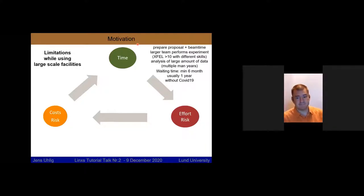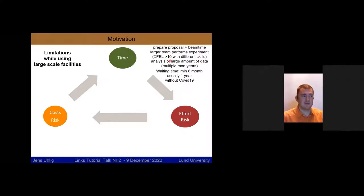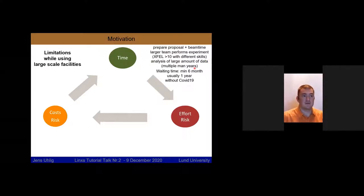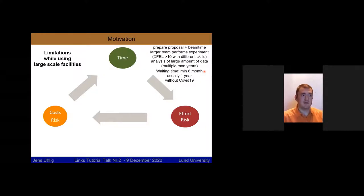There are three major limitations. One is the time it takes before I can do an experiment. I have to prepare the proposal and the beamtime, assemble a team — particularly for time-resolved experiments, this can be more than 10 people. After data collection, I need to analyze a large amount of data, which takes many years of work. The waiting time from the announcement of a call to when I have my data is typically half a year to a year — and this was all before COVID-19, which caused further cancellations.